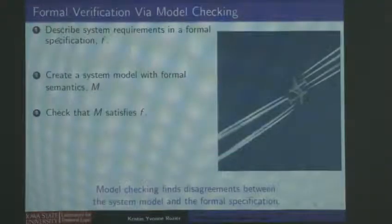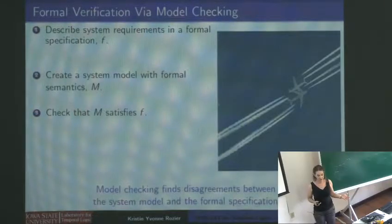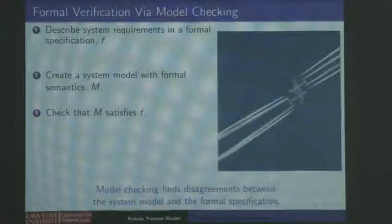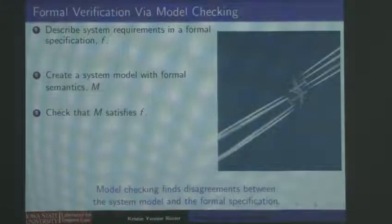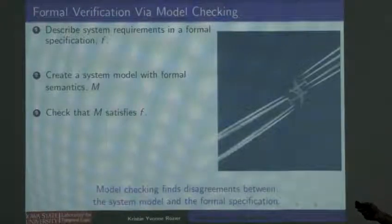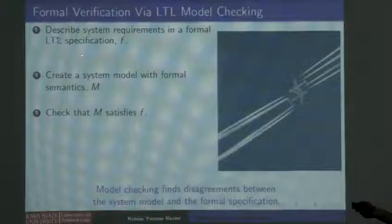We can take linear temporal logic and verify the examples shown at the beginning via the technique of model checking. In model checking, we describe some requirement of the system — like 'P must always be true' or 'the airplanes must never experience a loss of separation.' That's in our formal specification F, our LTL specification in this example.